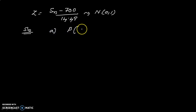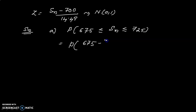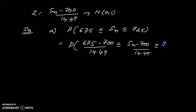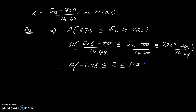First question: what is the probability that the number of hits lies between 675 and 725? P(675 < Sn < 725). We standardize: this equals P((675 − 700)/14.49 ≤ Z ≤ (725 − 700)/14.49), which gives P(−1.73 ≤ Z ≤ 1.73).